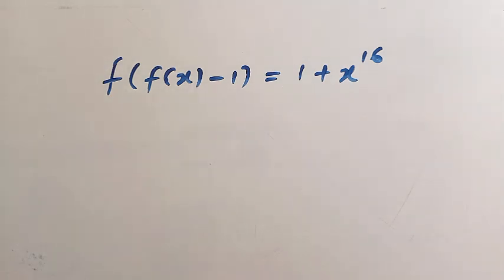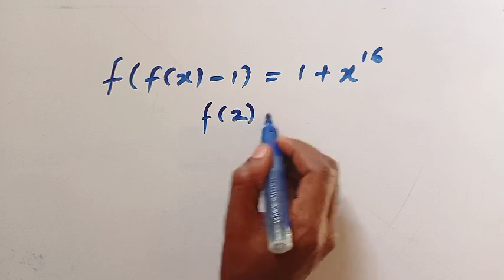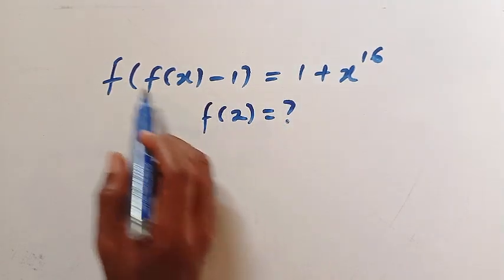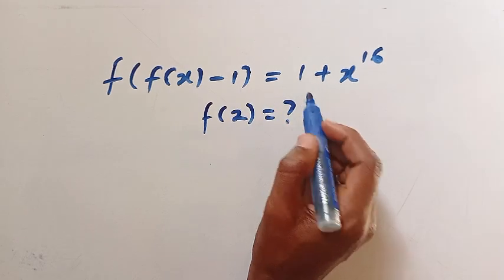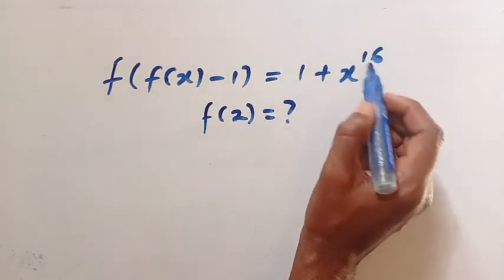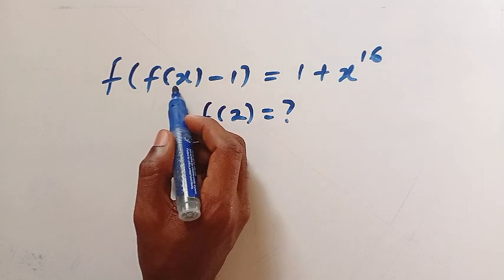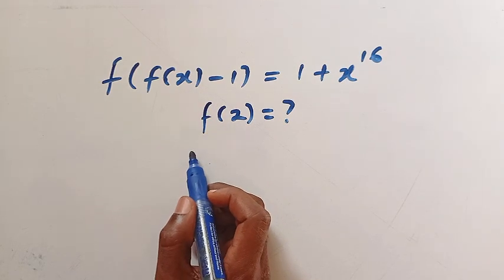But how do you solve this? Before I try this, you can drop the answer in the comment box. So the question here is: what is f of 2? Given this composite function f of f of x, minus 1, equals 1 plus x to the power of 16. Is there any direct formula for this?